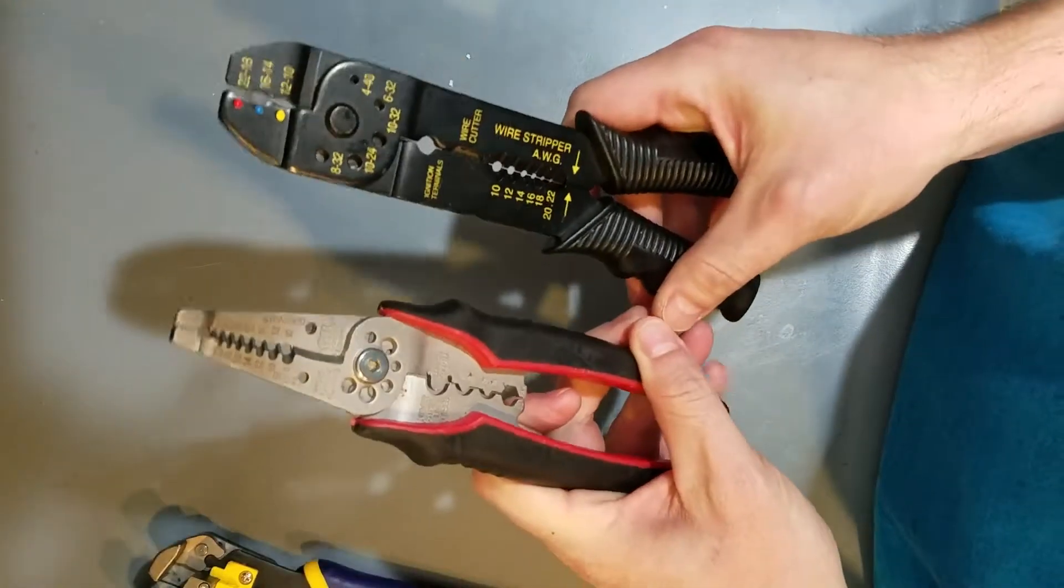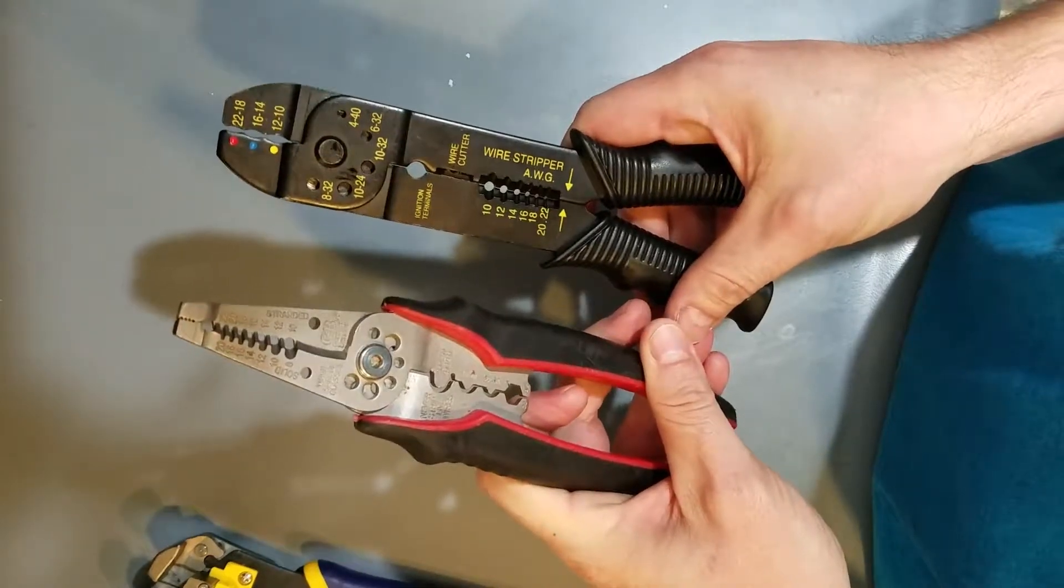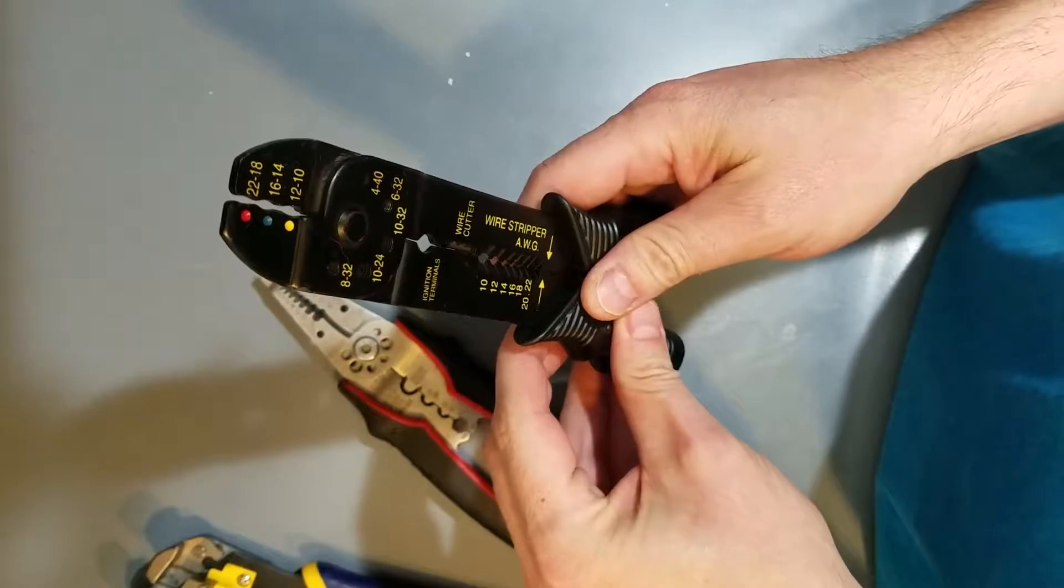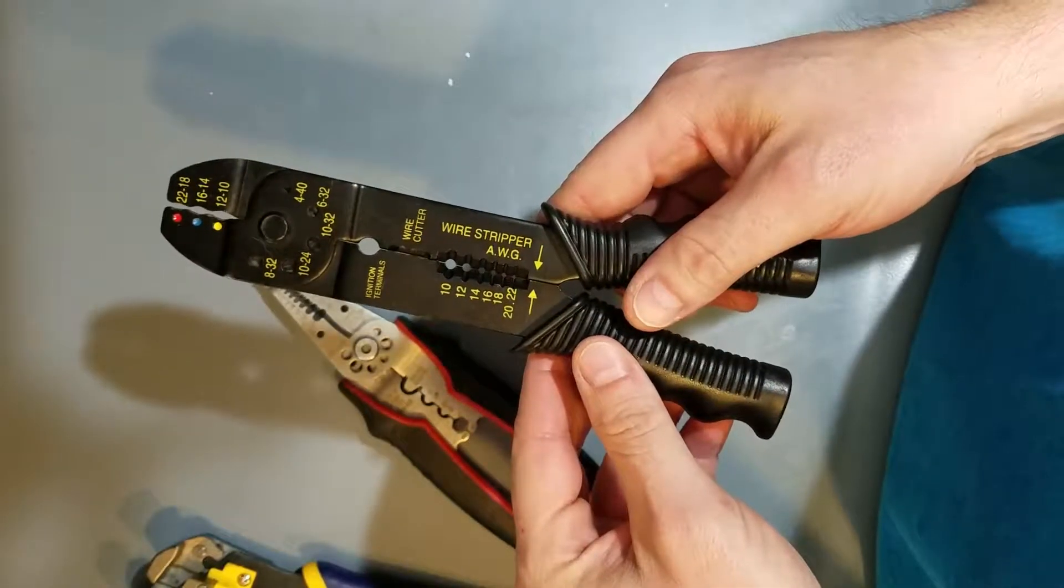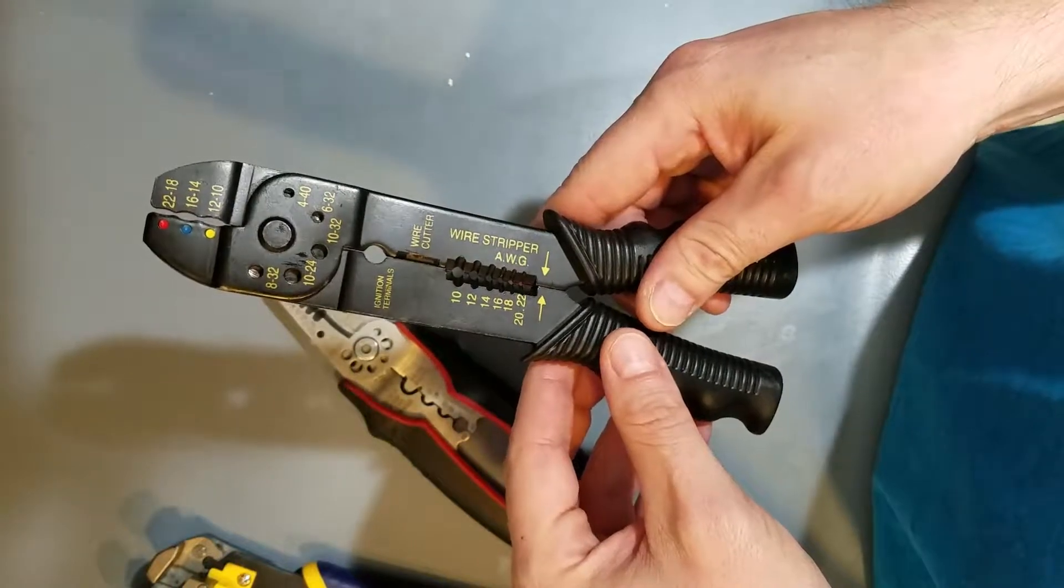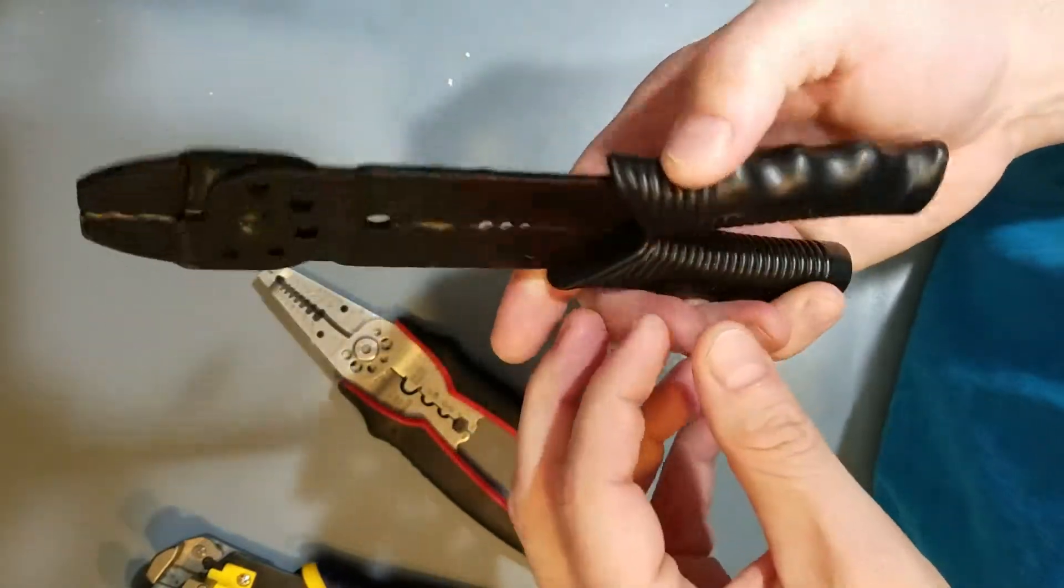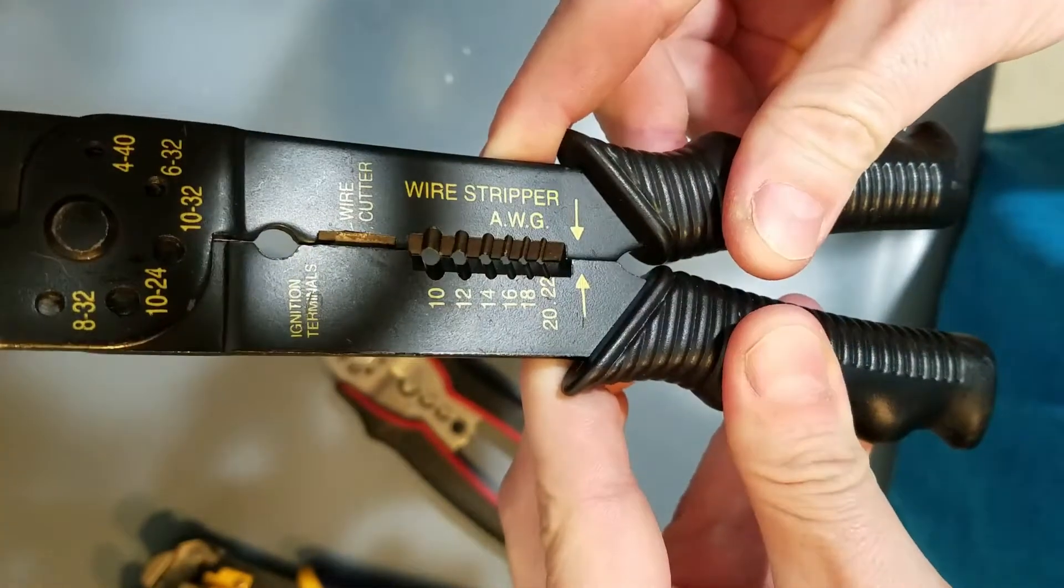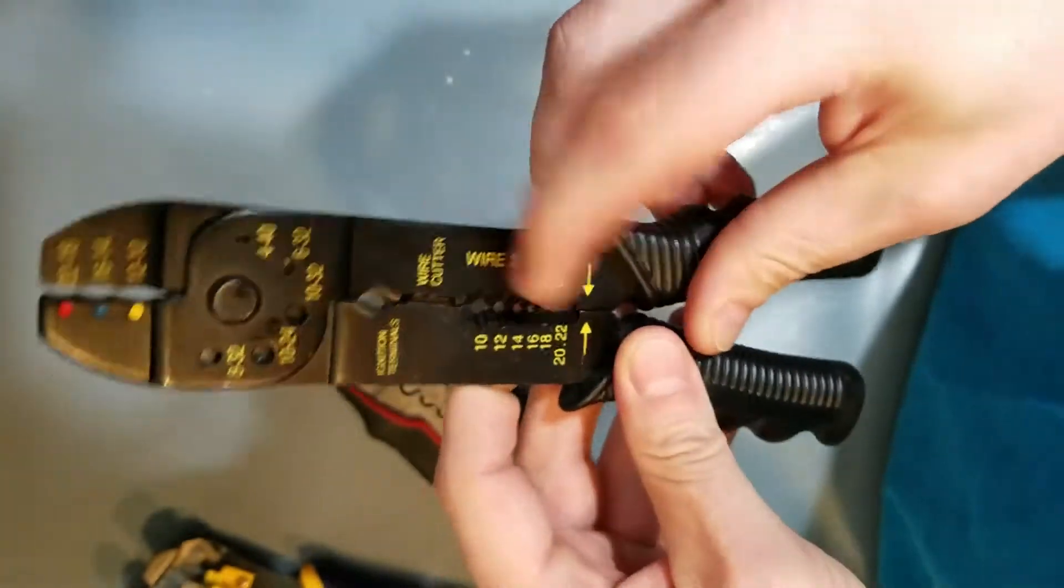These are combo strippers and crimpers. This one here is primarily a crimper and it's probably not even worth talking about when it comes to stripping wire because the registration is pretty bad on the stripper side of it.